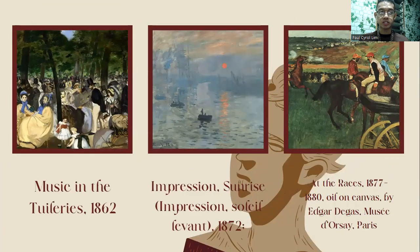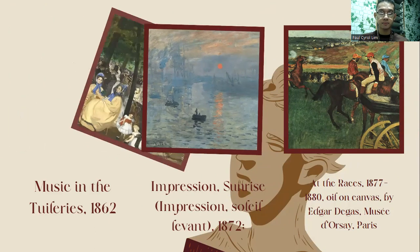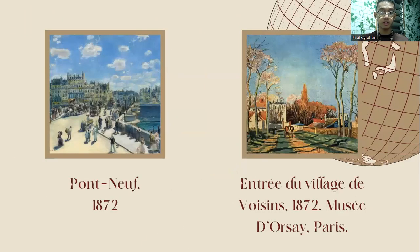These are the artworks of the Impressionists: Music in the Tuileries, 1862, by Édouard Manet. Impression Sunrise, or Impression Soleil Levant, 1872, by Claude Monet. At the Races, 1877 to 1880, oil on canvas by Edgar Degas, Musée d'Orsay, Paris. Pont Neuf, 1872, by Pierre-Auguste Renoir. And Entrée du Village de Voisins, 1872, Musée d'Orsay, Paris, a painting by Camille Pissarro.